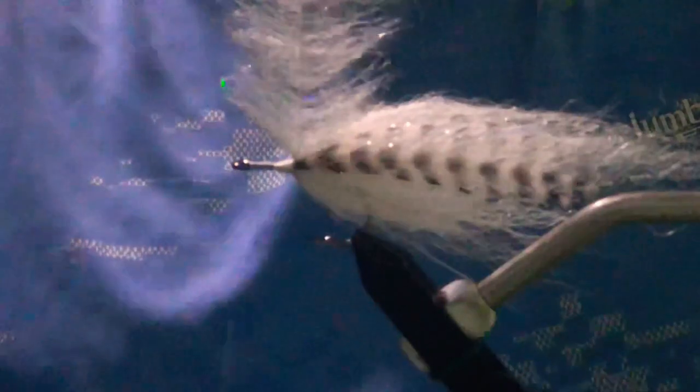And again, we just take our hackle pliers and we'll just palmer this forward, stroking it back all the way to the front of the hook. Usually you get right around 8 or 9 wraps. On this 2.0 hook, if you were using a 1.0 or something smaller to do this with, you probably only get maybe 6 or 7 wraps.